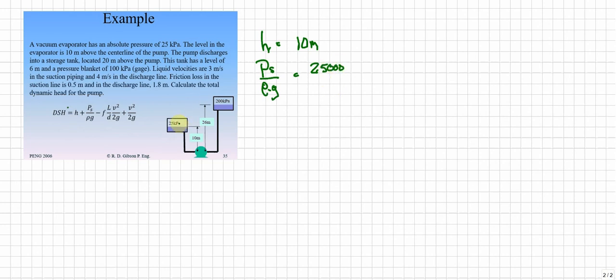Now notice that's absolute pressure, that's fine as long as we do absolute pressure in the other tank. And since it's water, it's 9810 on the bottom, 9.81 times 1,000.